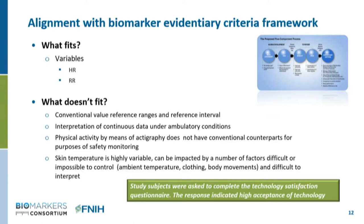Variables are well established — we know what heart rate and respiratory rate are. What doesn't fit is the resting and supine protocol. When people are moving, heart rate and respiratory rate change, and there is no clear guidance. We couldn't find anything that would give an equivalent reference range for ambulatory conditions — if people are moving around, what is the equivalent of 60 to 100 beats per minute? Physical activity impacts these measures significantly, as my demonstration showed. We also discovered that skin temperature is very difficult to interpret because it's much more variable than oral body temperature. It's impacted by measurement location, clothing, ambient temperature, and physical activity. When we compared oral cavity body temperature to skin temperature, we couldn't find any correlation at all.